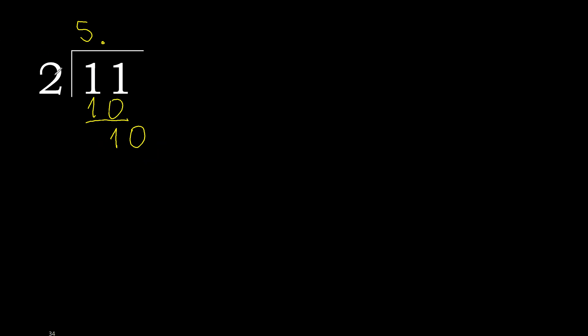2 multiplied by which number? Multiply by 5 is 10. It's not greater. 10 minus 10 is 0.